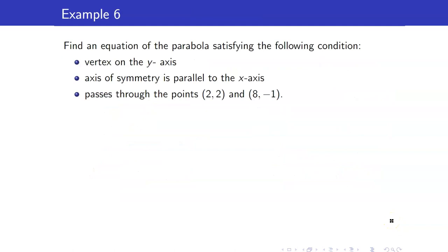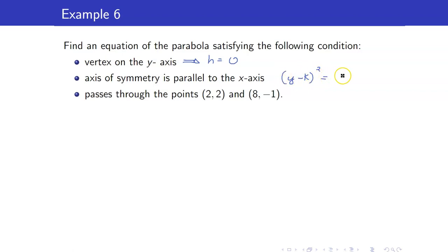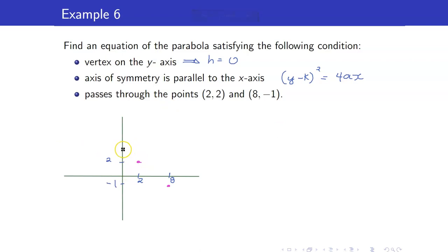For our last example, let us find the equation of the parabola satisfying the following conditions. The vertex is on the y-axis, so h equals 0. The axis of symmetry is parallel to the x-axis, which means y is going to be squared. So our form is y minus k squared equals 4a times x minus h, but h is 0. It passes through the points (2, 2) and (8, negative 1). From this equation, we need to find a and k.